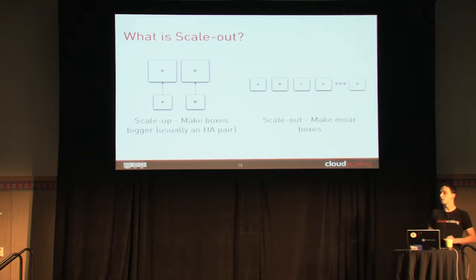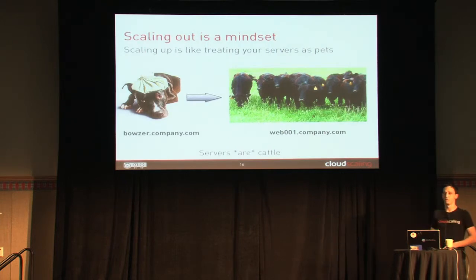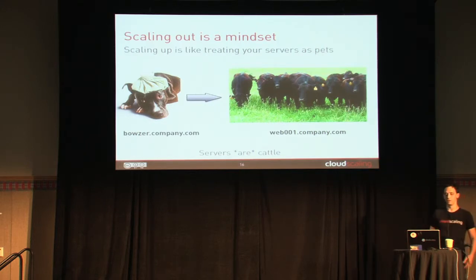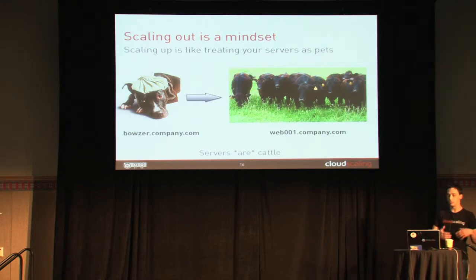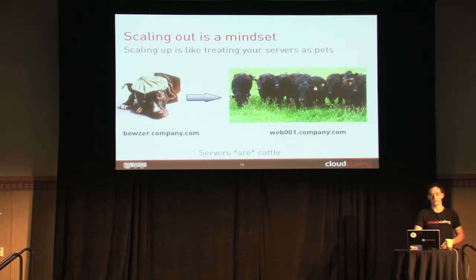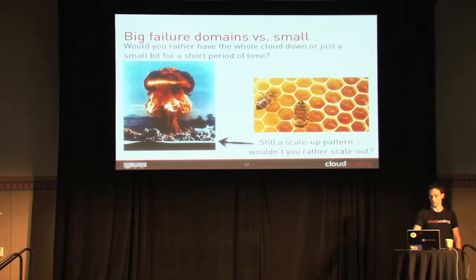Quickly, just going to scale-up: instead of scaling up and making boxes bigger, you want to scale out and make more boxes. You don't want pets and dogs, you want cattle. If you have a problem with one of your cows, you shoot it — you don't treat it nicely like your dog. Because again, we don't have reliability. According to computer science theory, we cannot have reliability, so we can't treat our things like pets. We have to presume that they're just going to die. We need to have small failure domains and not big failure domains, because it will fail.